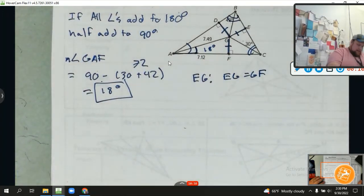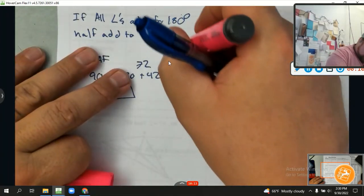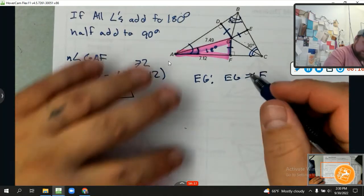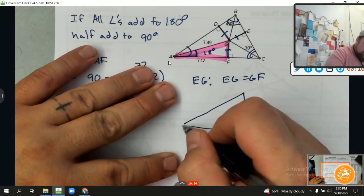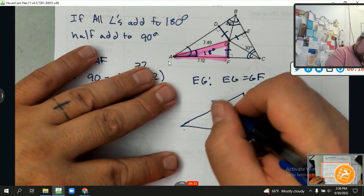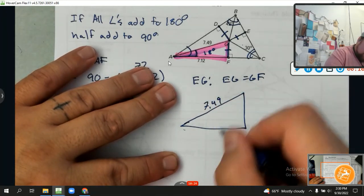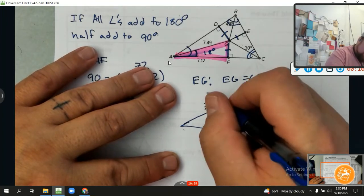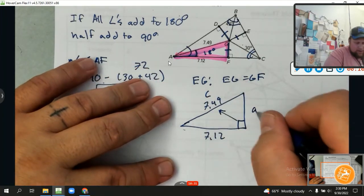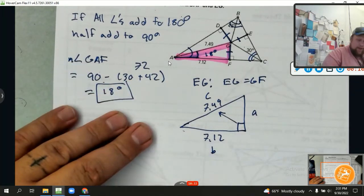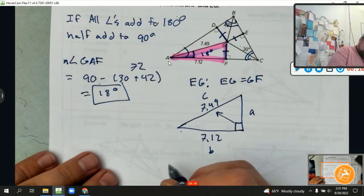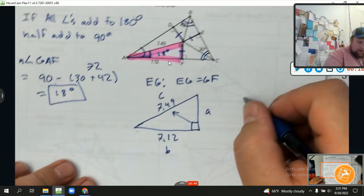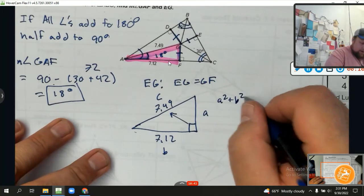So I'm going to redraw this triangle right here. In fact, I'm going to highlight it. I'm just going to work on this triangle. If I draw this triangle, boom, I know that it's 7.49, 7.12. Here's my right triangle, that's my hypotenuse, that's my c. Go ahead and call this a and this b.